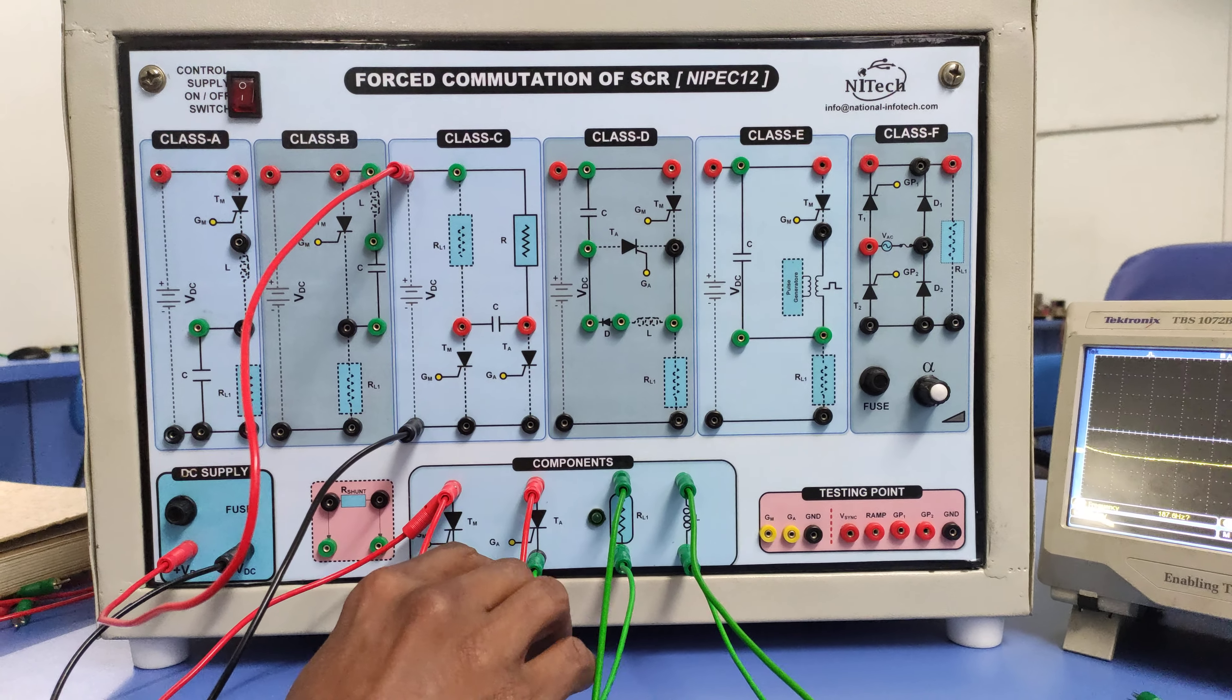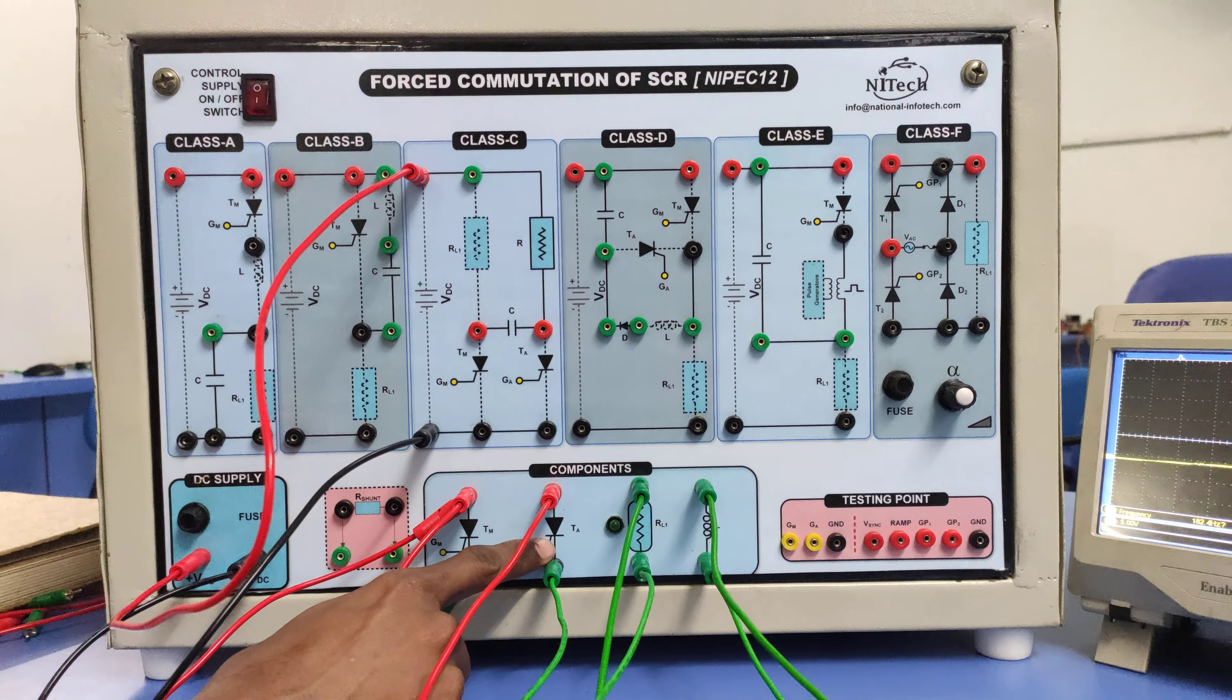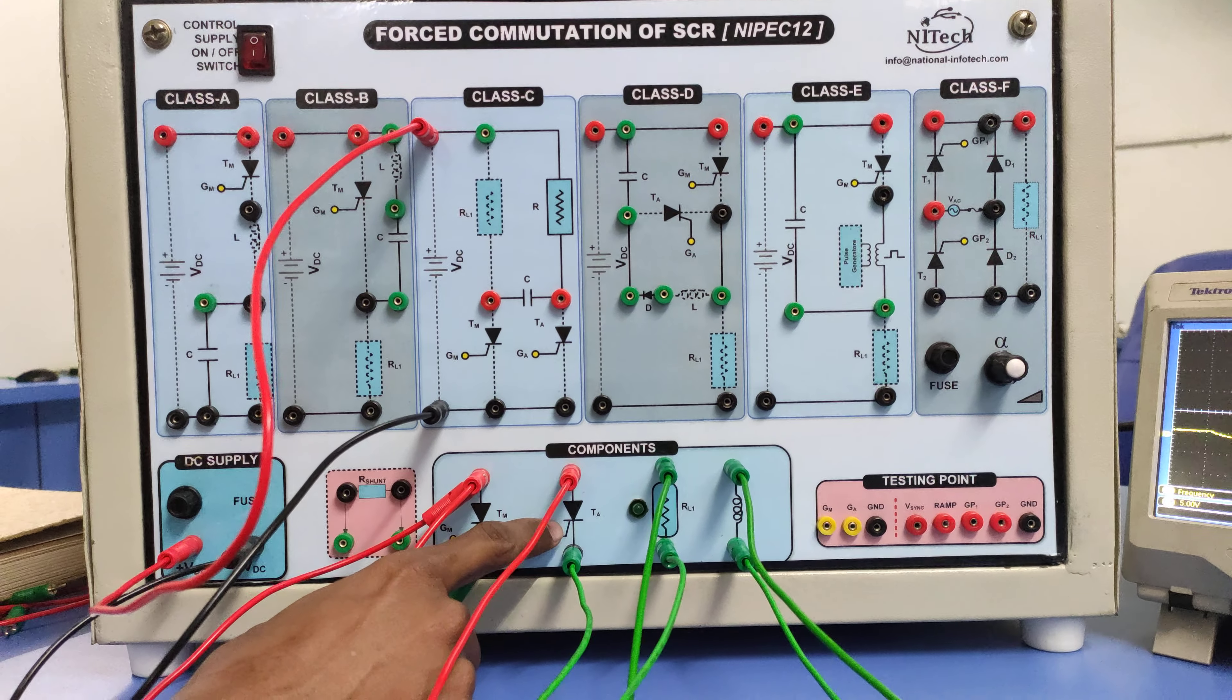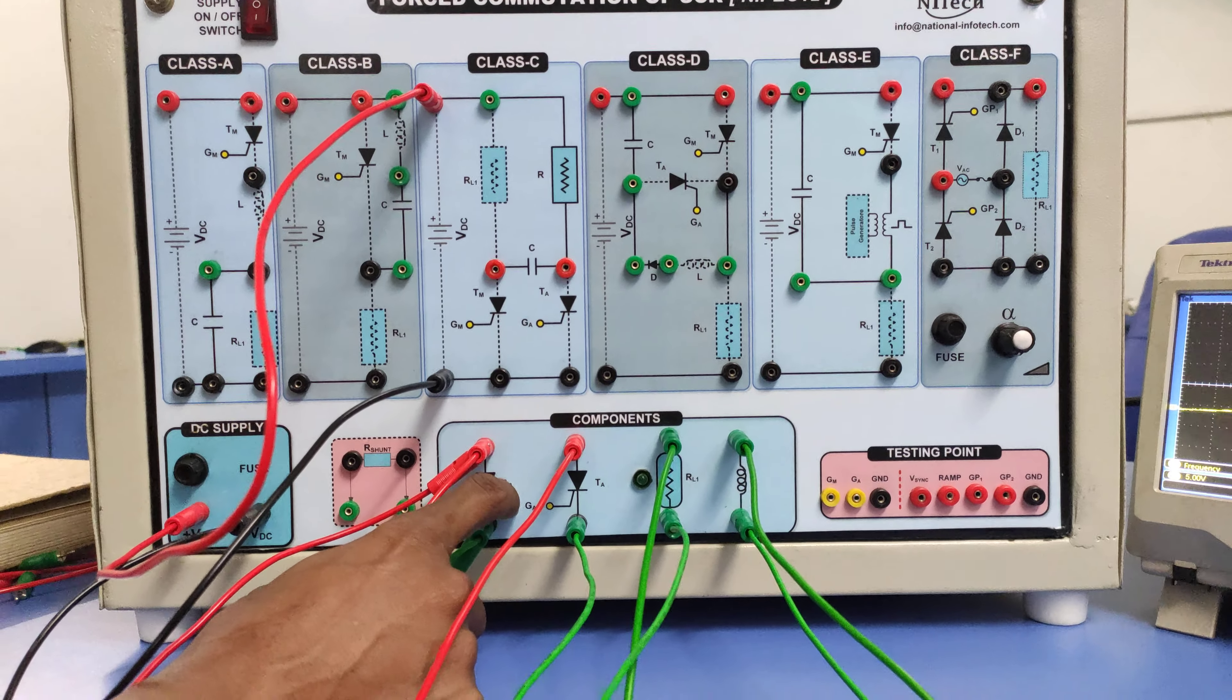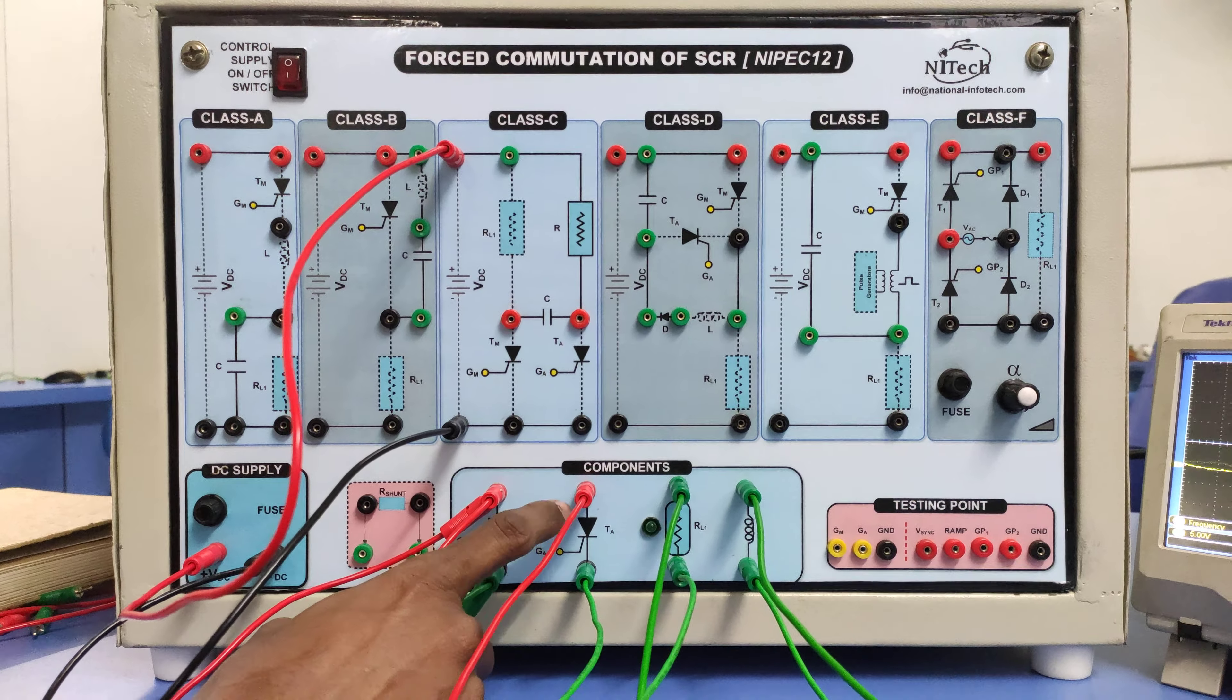So here we are using two thyristors: one is the main thyristor and another is the auxiliary thyristor. The auxiliary thyristor will help us to turn off the main thyristor, or to commutate the main thyristor TM. We will use one extra thyristor which is called the auxiliary thyristor.